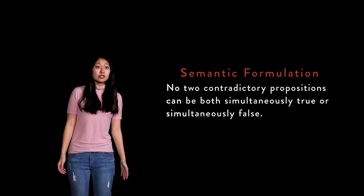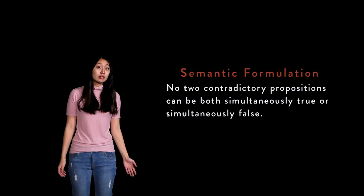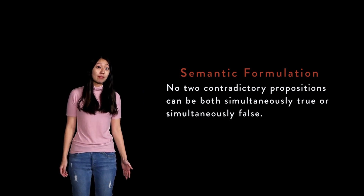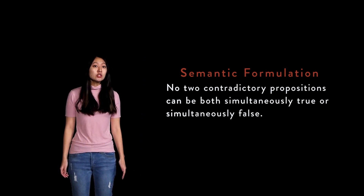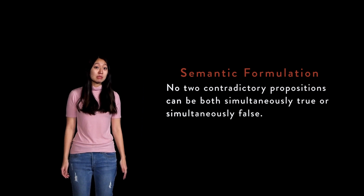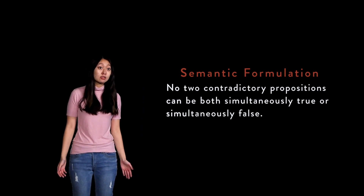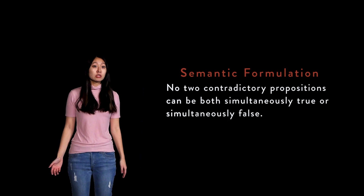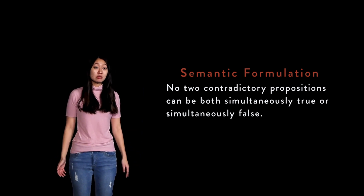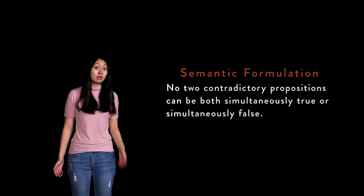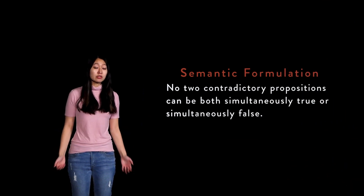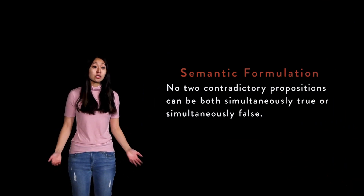The semantic formulation differs from the first two formulations insofar as it captures the logical sentiment behind them. The first two formulations state principles about the possibility of objects to be x and not x at the same time, or principles about whether a subject is ever justified to believe that an object is x or not x at the same time. The semantic formulation simply reflects these two principles in their application to logic.